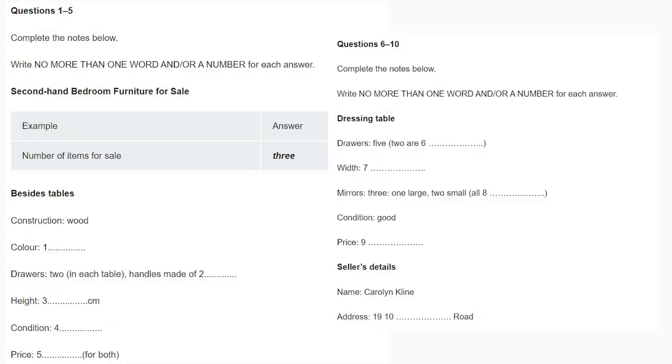Test 3. You will hear a number of different recordings and you will have to answer questions on what you hear. There will be time for you to read the instructions and questions and you will have a chance to check your work. All the recordings will be played once only. The test is in four sections. At the end of the test, you will be given 10 minutes to transfer your answers to an answer sheet. Now turn to section 1.